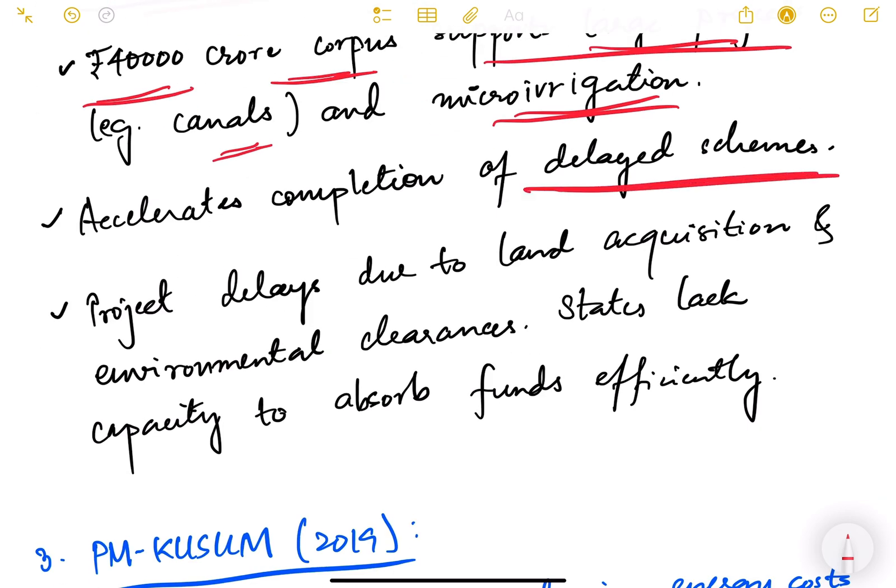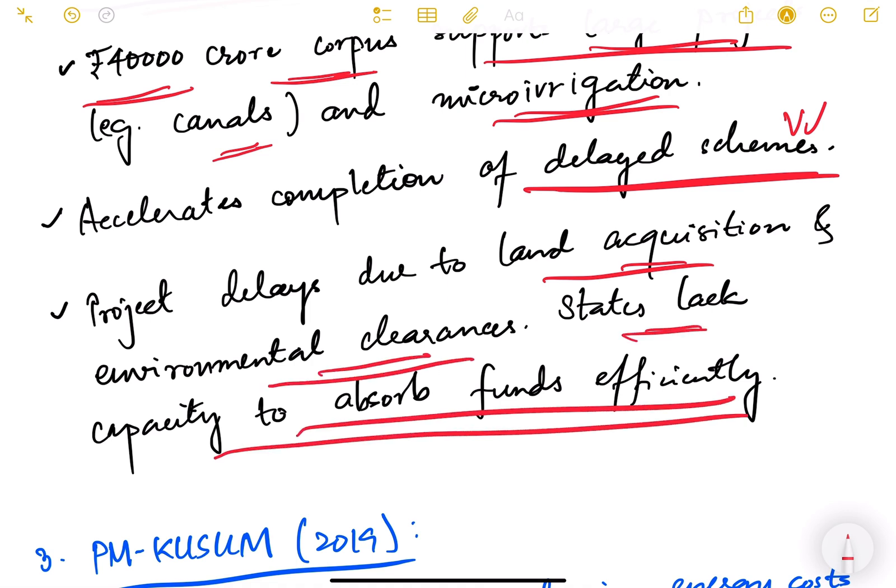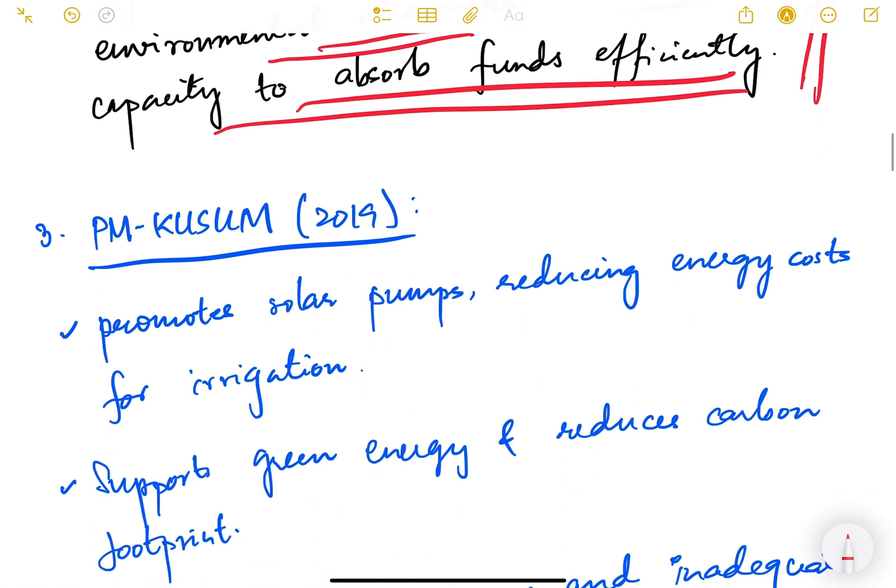Wherever the projects are getting delayed and need some extra funding, that is done through this LTIF. Project delays due to land acquisition and environmental clearances, and states lacking capacity to absorb funds efficiently are some of the drawbacks of this particular program.